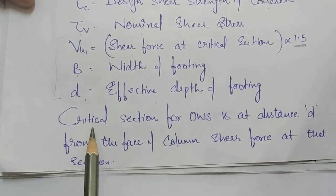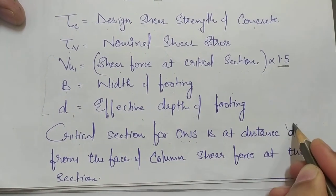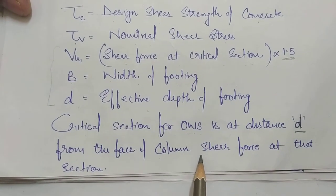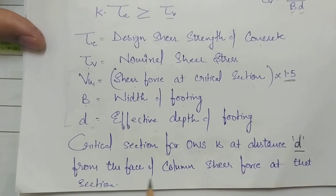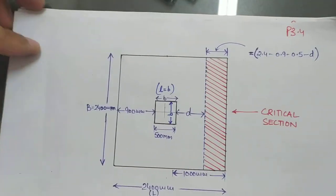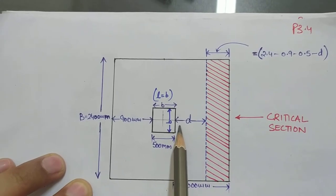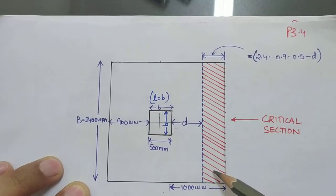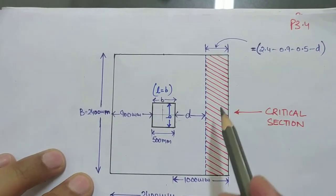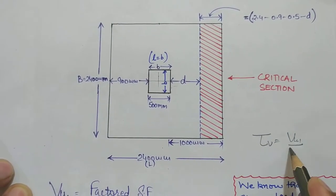The critical section for one-way shear is at a distance D (effective depth) from the face of the column. The shaded portion beyond this section is the critical area. Using the concept that load = stress × area, VU1 = upward soil pressure × B × L, where L is the length of the shaded area. We calculate τV = VU1 / (B × D).